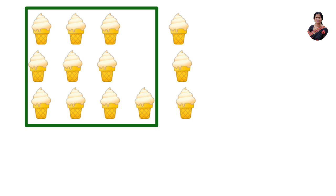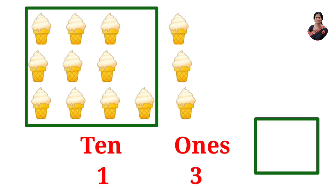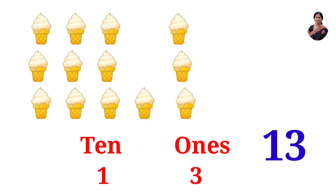Here are ice creams. In a box, ten ice creams, and how many ones are here? One, two, three. Three ones. That is one ten and three ones. What will be the number? One, three — thirteen. The number is one three — thirteen.